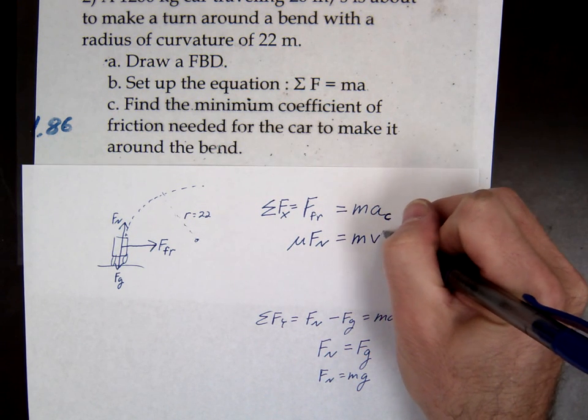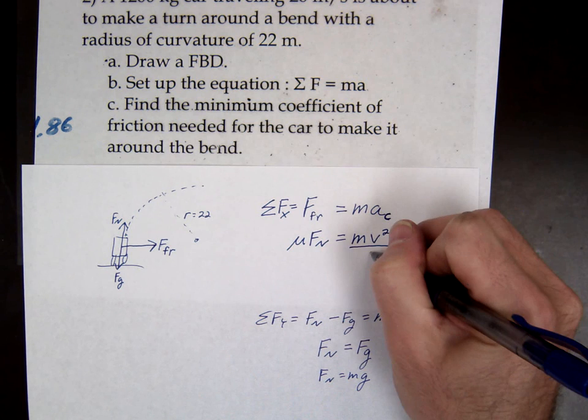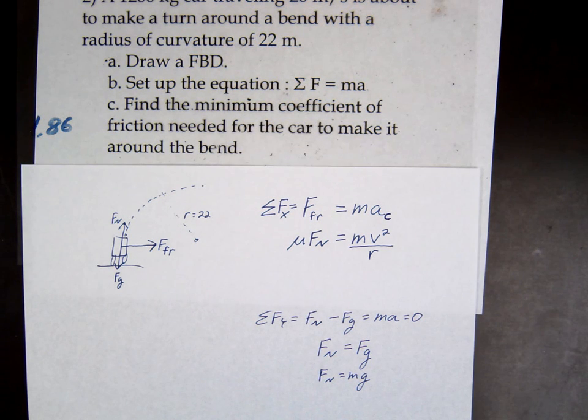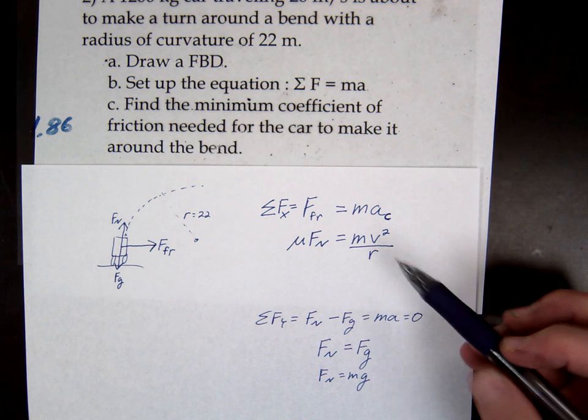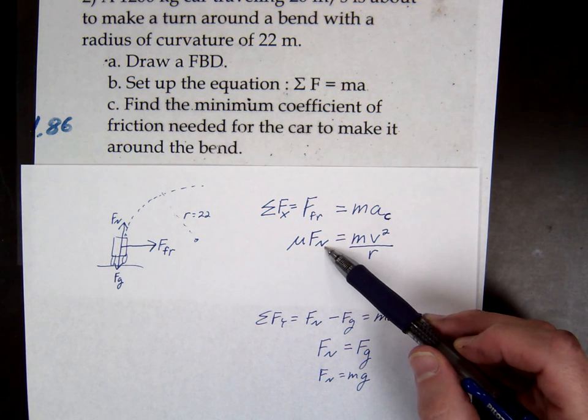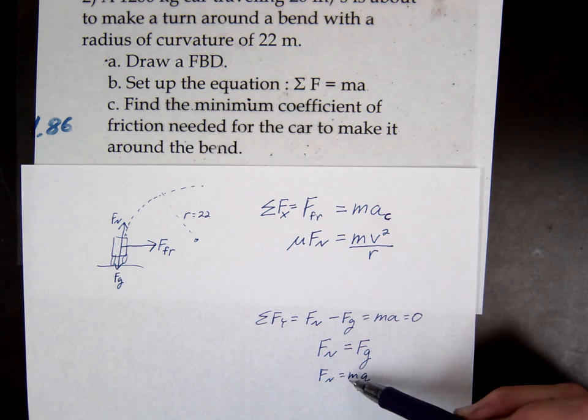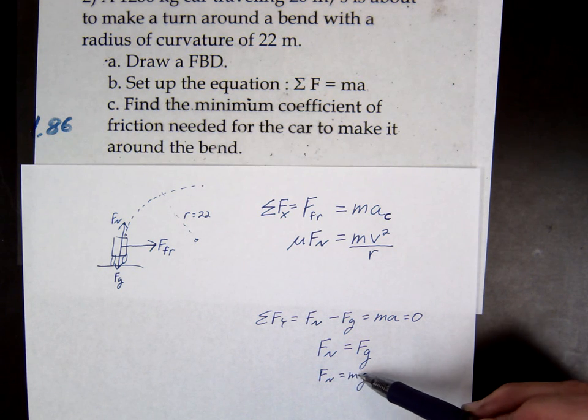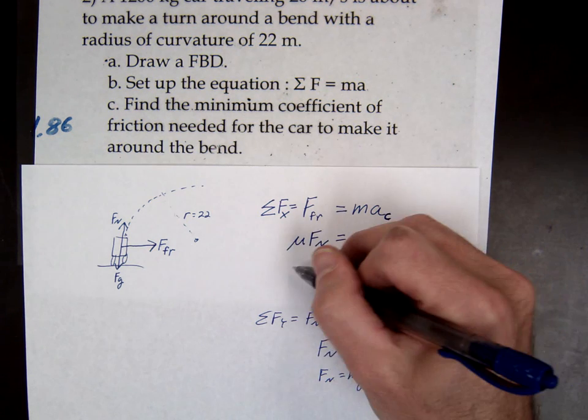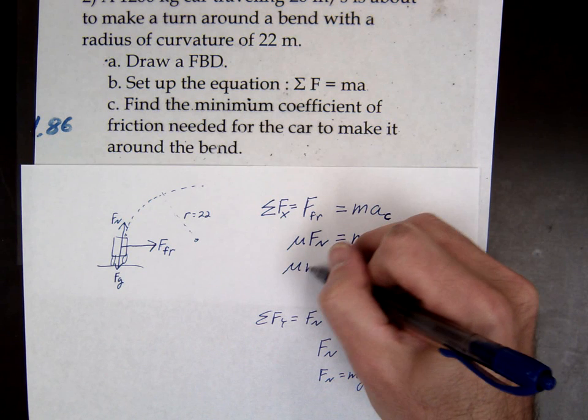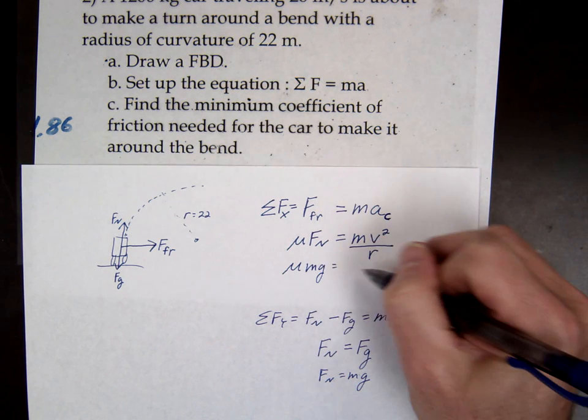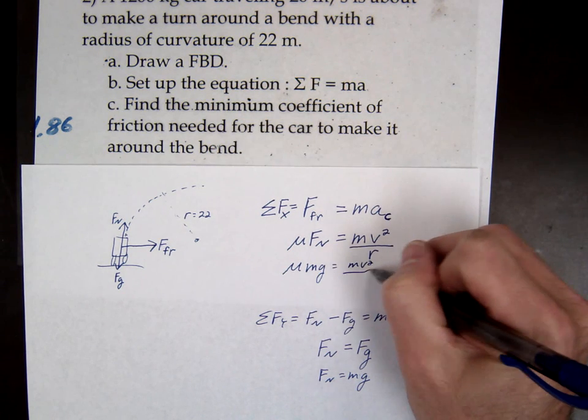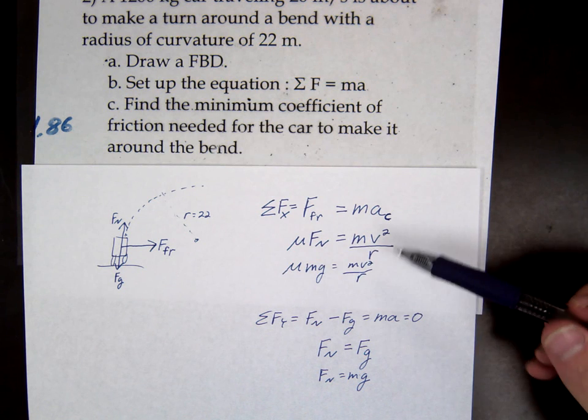Mv squared over r. So we have mu times fn equals mv squared over r. Now we do know f normal - I mean you could calculate the number but let's just do it with the variables. What's our equation for f normal? M times g. This gives us mu mg equals mv squared over r.